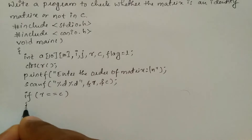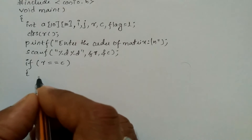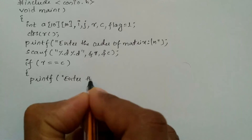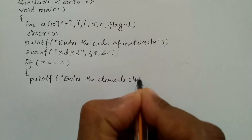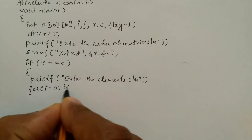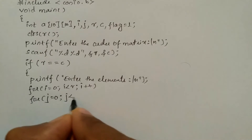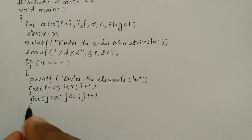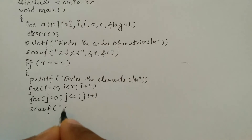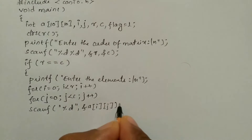Now we'll use a printf statement to ask the user to enter elements. If this condition is true, the control enters into the body of this if statement. I'm going to write printf and in double quotation marks, we'll ask the user to enter the elements, backslash n, and put a semicolon. Now we'll use two for loops: for i is equal to zero, i is less than row, i plus plus, and one more for loop for j is equal to zero, j is less than column, j plus plus. Now we're going to use a scanf statement: scanf %d, comma, ampersand of a of i and j, and put semicolon.